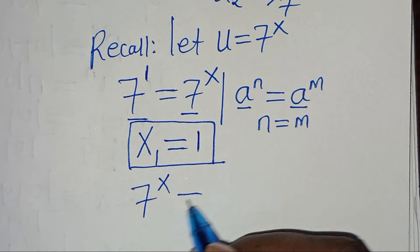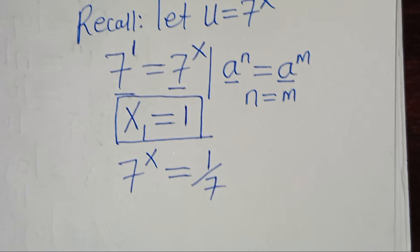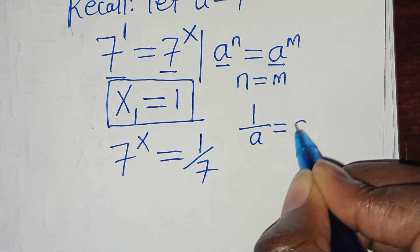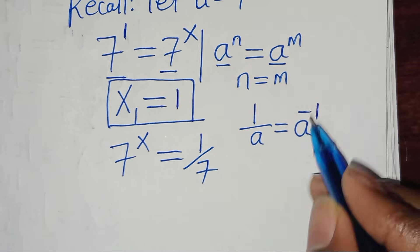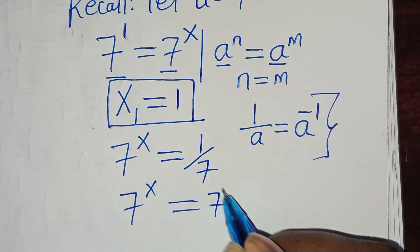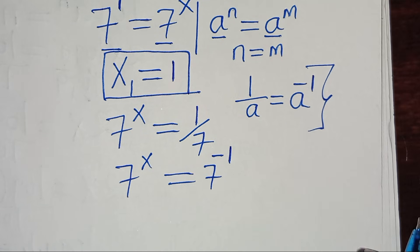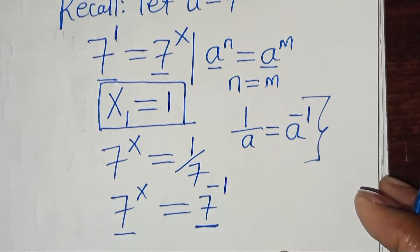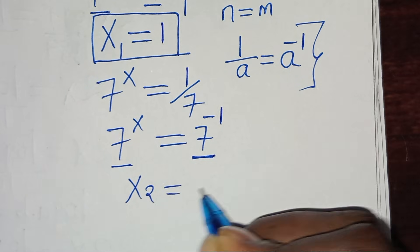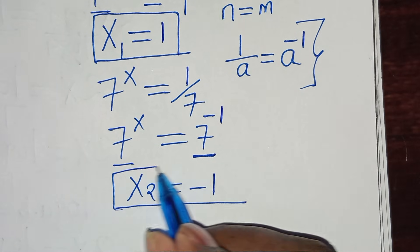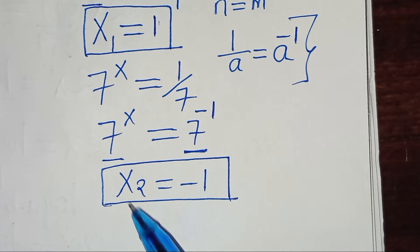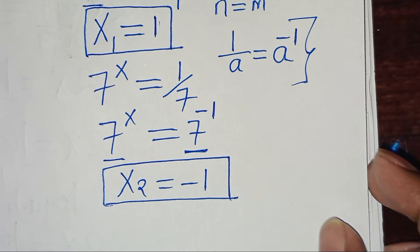Given that u₂ is 1 over 7, we have 7 to the power of x equals 1 over 7. Now applying the property that 1 over a equals a to the power of minus 1, we get 7 to the power of x equals 7 to the power of minus 1. Since the bases are common, x₂ is equal to minus 1. So we have x₁ equal to 1 and x₂ equal to minus 1.